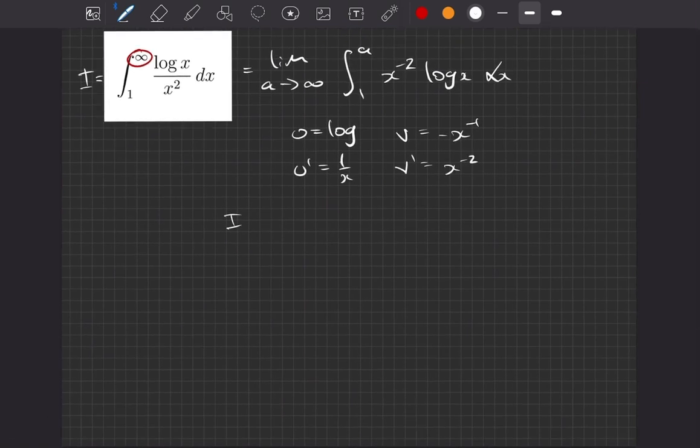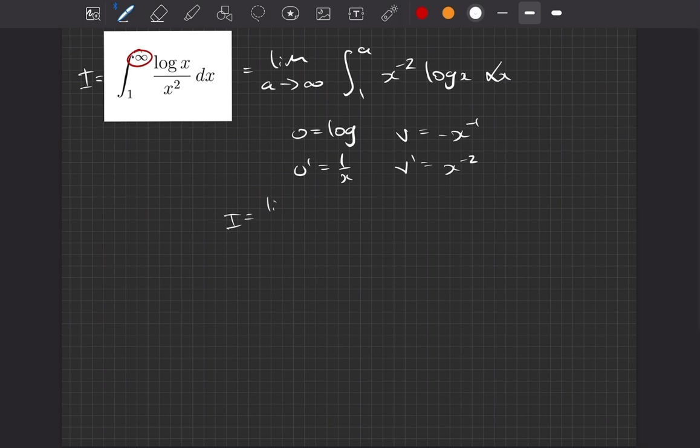So then our integral I is going to be equal to the limit as A goes to infinity of, well we can think about our first part then, it's going to be u times v, so it's minus log of x over x, evaluated from 1 to A, minus the integral of u dash v. Well, we have 1 on x and another minus 1 on x, so the minuses will make a plus, and altogether then it's x to the minus 2. And again, this is evaluated at 1 and A.